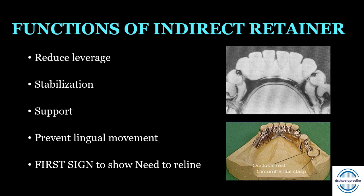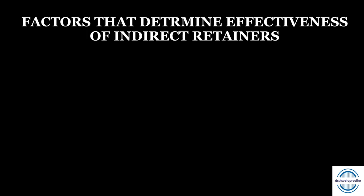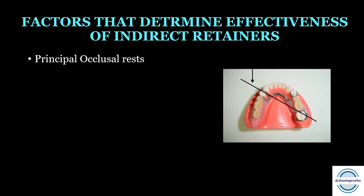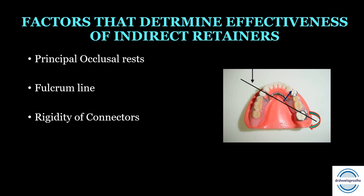Indirect retainers get dislodged from the rest seat when the denture base is depressed and rotation occurs. Factors determining effectiveness of indirect retainers: first, the position of the principal occlusal rest — it determines where the fulcrum line passes; second, the position of the fulcrum line — once drawn, we can mark the position of the indirect retainer; third, rigidity of connectors — only rigid connectors allow indirect retainers to work effectively; fourth, the supporting tooth — the abutment carrying the indirect retainer must have adequate prognosis.